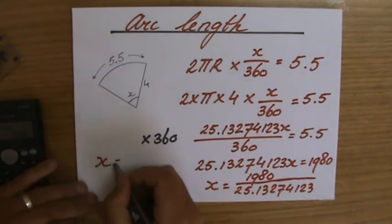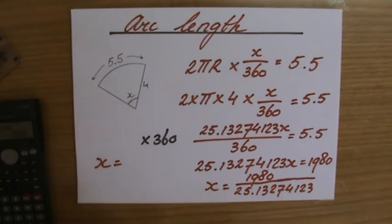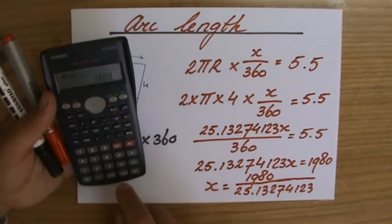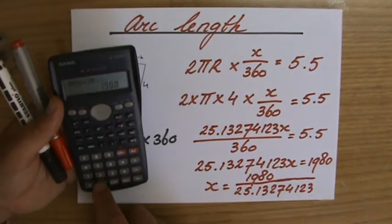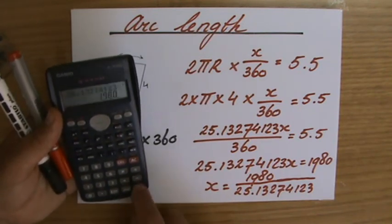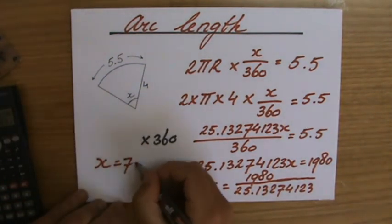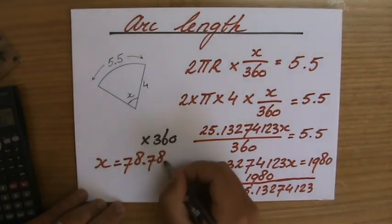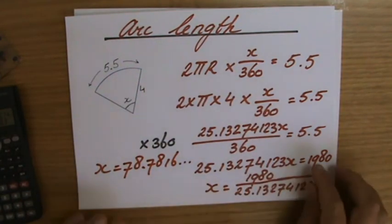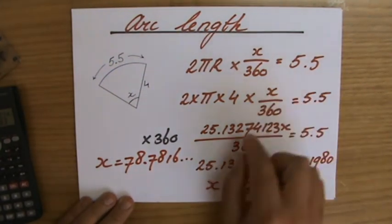Anyway, I just wanted to show you that these are just numbers, yeah? So there's nothing to be scared about. You've been rearranging formulas similar to this one already for a long time. Anyway, 1,980 divided by 25.13274123 equals... and my calculator tells me that equals 78.7816 and a couple of other decimals.